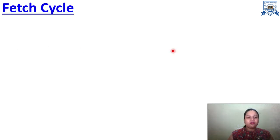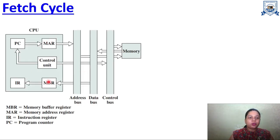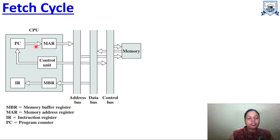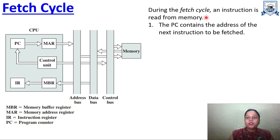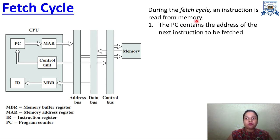Let's see the first sub-cycle — the Fetch Cycle. This diagram shows the components of the computer: the CPU with various registers, the control unit, and three buses — address bus, data bus, and control bus. These components are connected with each other as shown by the arrows. During the fetch cycle, an instruction is read from the memory. The PC contains the address of the next instruction to be fetched, and that address is transferred to MAR — the Memory Address Register.